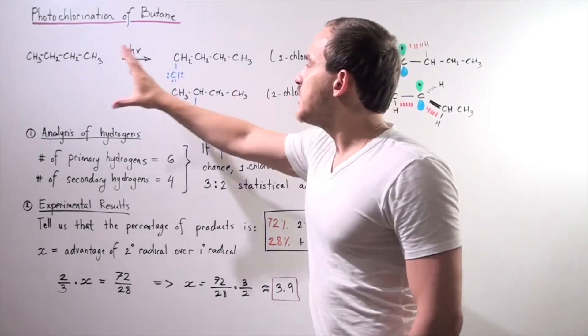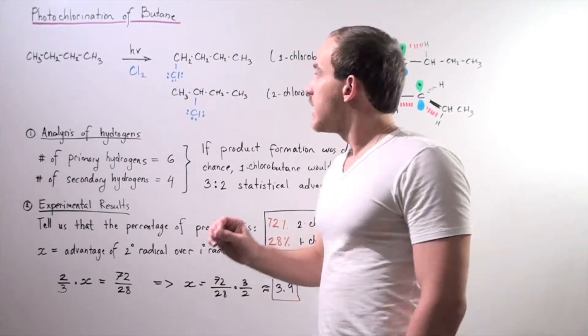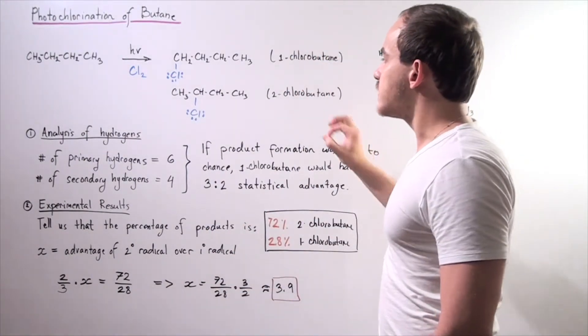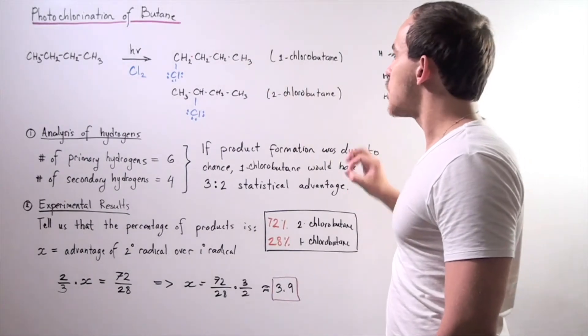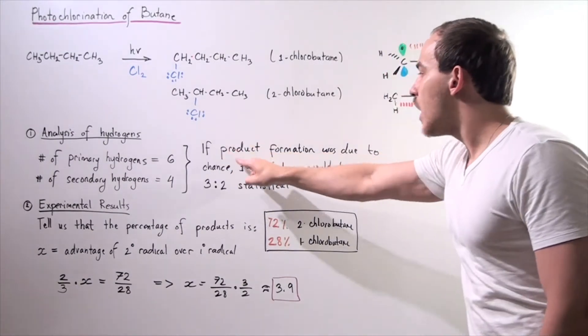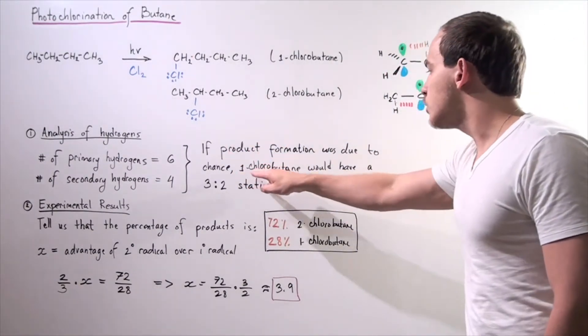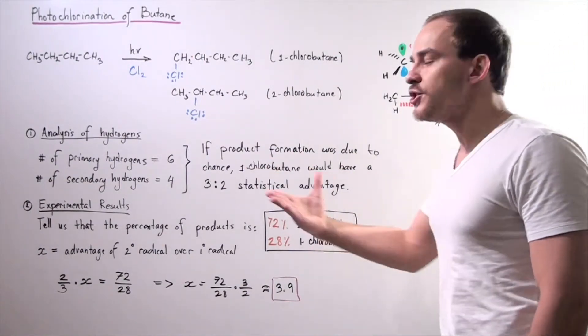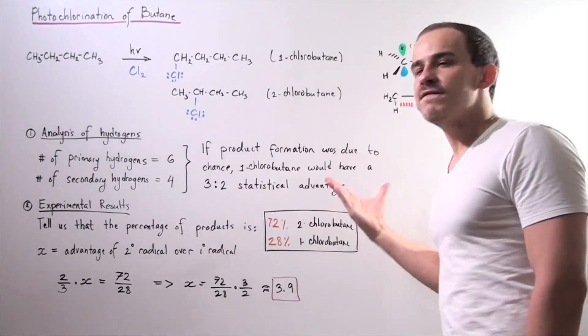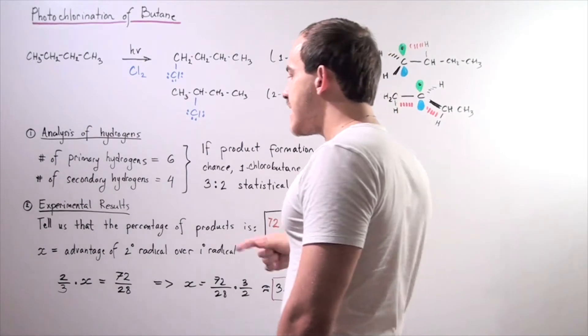Now, if this reaction was completely due to chance, since there are more primary H atoms than secondary H atoms, this would be the dominant product. In other words, if product formation was due strictly to chance, one-chlorobutane would have a three to two or six to four statistical advantage over two-chlorobutane. But this is not actually the case.